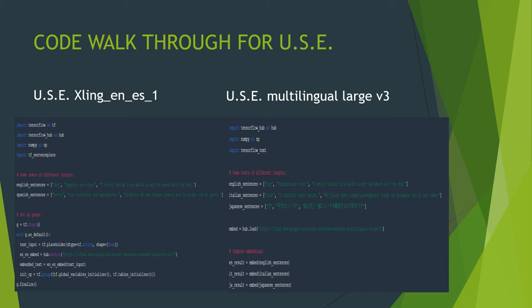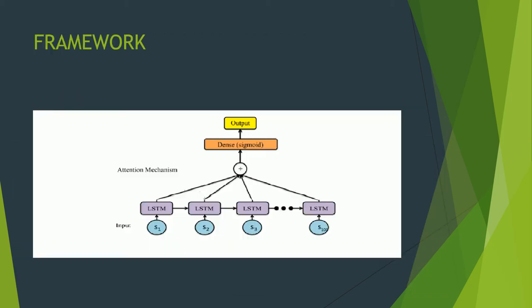Similarly for Universal Sentence Encoder Large Version 3, we import TensorFlow Hub, NumPy, TensorFlow test, and provide English, Italian, and Japanese text, load the model, and find the output using embed. Our architecture provides inputs s1, s2, s3, ..., s100 — 512-dimensional vectors from the Universal Sentence Encoder — which feed into the LSTM. The LSTM output is passed through an attention layer, then a sigmoid layer to produce the final output.